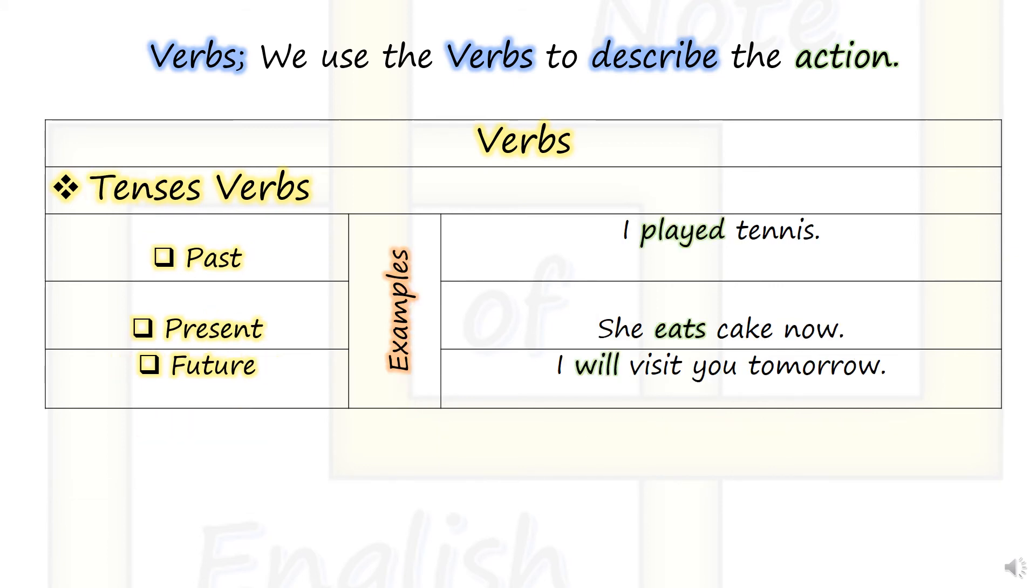Tenses. Verbs can be past tense (example: I played tennis), present tense (example: she eats cake now), or future tense (example: I will visit you tomorrow).